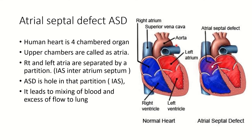First, what is atrial septal defect? Our heart is a four-chambered organ — the upper two are atria and the lower two are ventricles. The right side receives deoxygenated blood and the left side receives oxygenated or pure blood. There is a partition between the right and left side. In atrial septal defect, there is a hole in the upper chamber of the heart, as seen in the arrow here. Blood from the left side goes to the right side, the right side increases in size, and there is increased blood flow to the lungs.